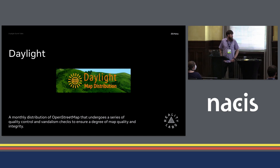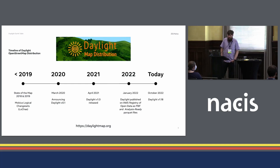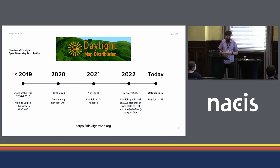Daylight is a monthly distribution of OSM that undergoes a series of quality control and vandalism checks to ensure a degree of map quality and integrity. It started as early as 2018, 2019 with the then Facebook team presenting at State of the Map. In March of 2020, it announced the first beta version of Daylight, and now today, two years later, we're looking at release 1.18.